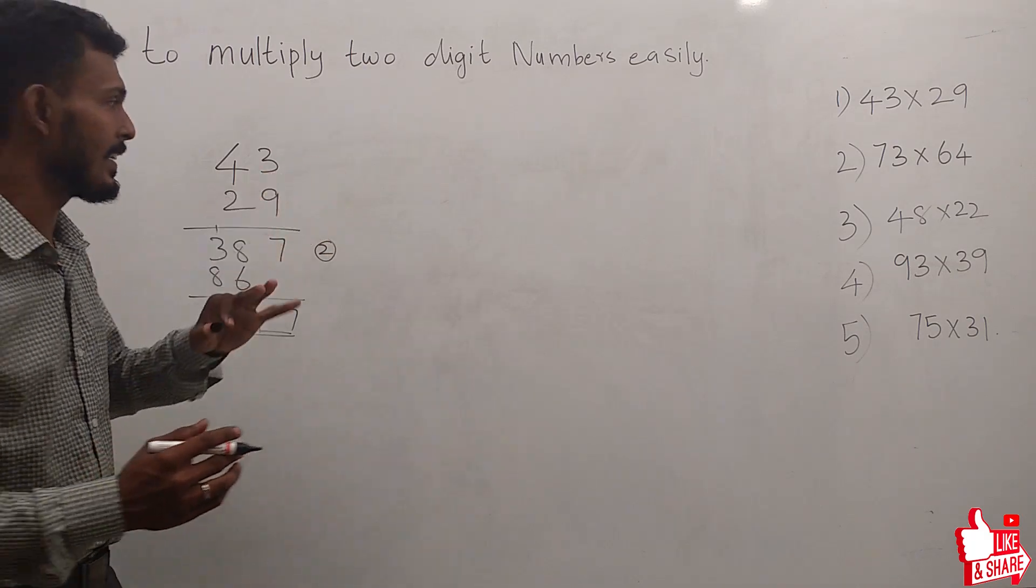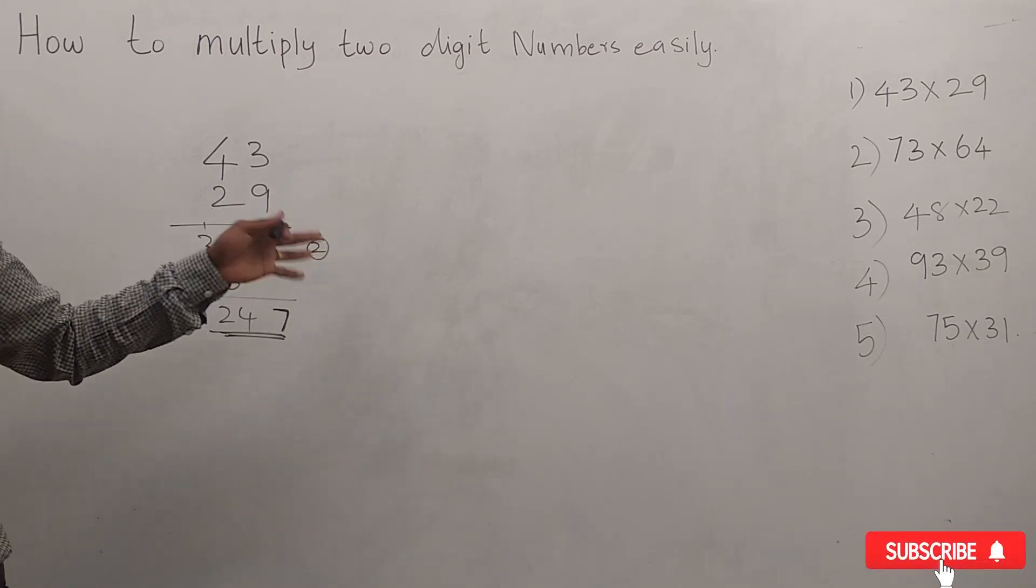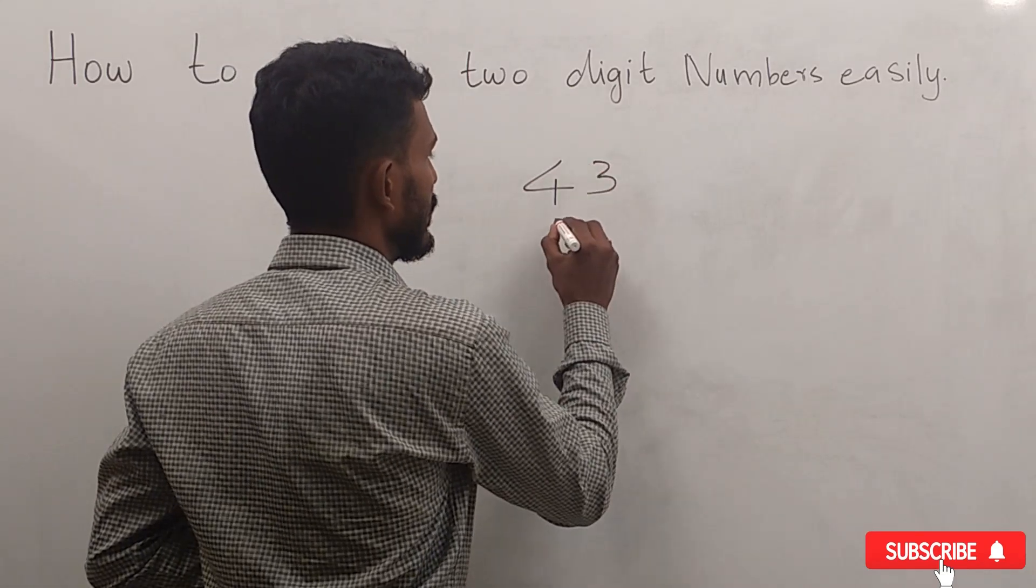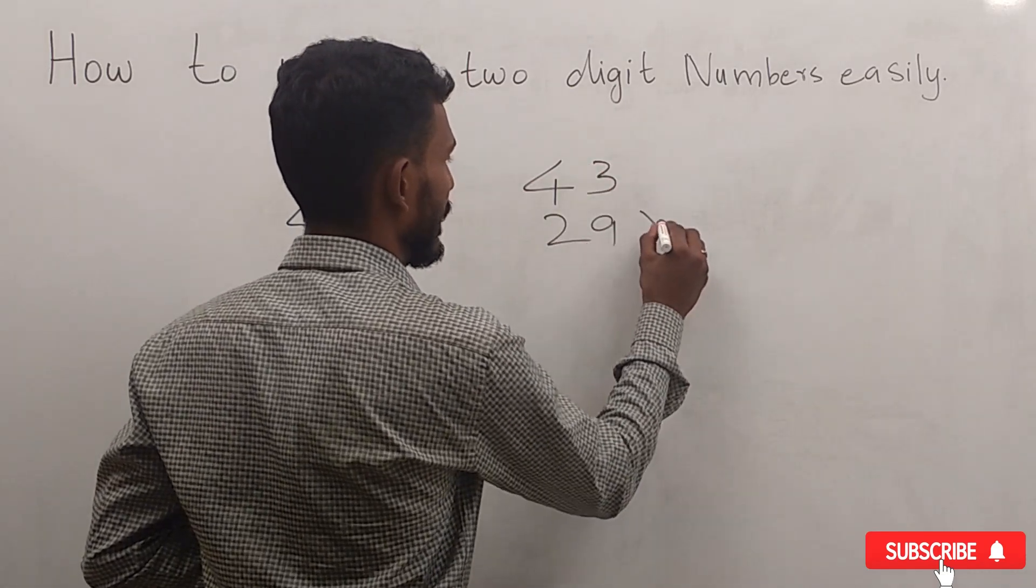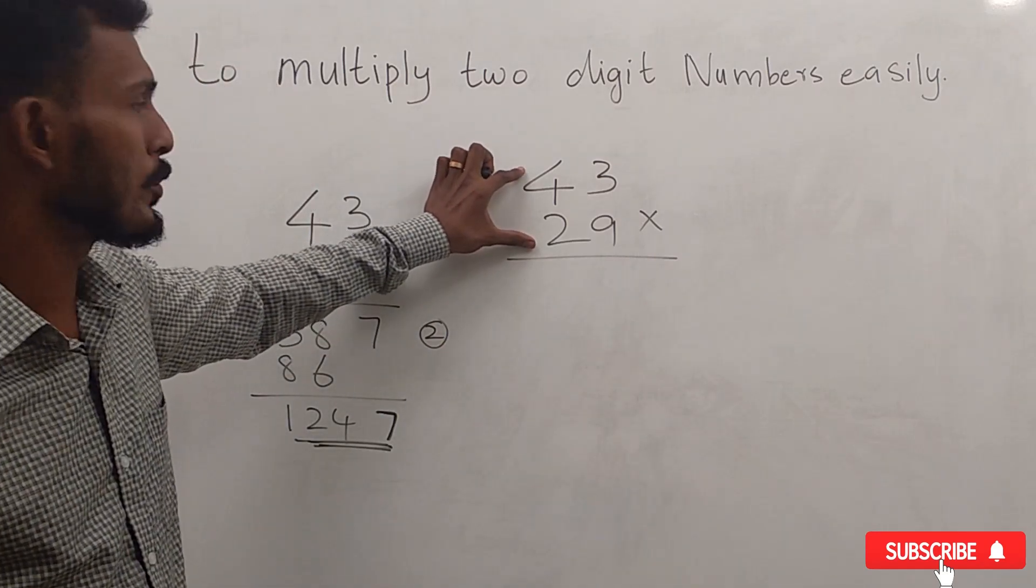I will be showing you another trick. 43 × 29. First of all, multiply these two numbers. 4 × 2 = 8.